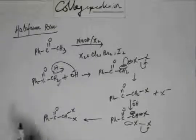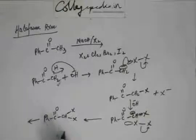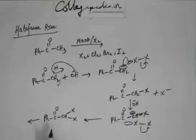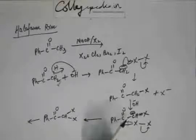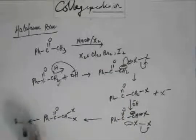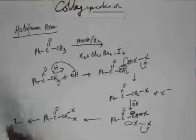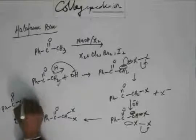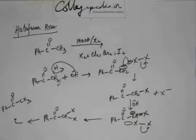So if you repeat the third step — base will come and abstract the hydrogen, then this halogen will be attacked by C⁻ and one X will also be added — then this last hydrogen will also be removed and one halogen will be added. So you are going to get a trisubstituted acetophenone.